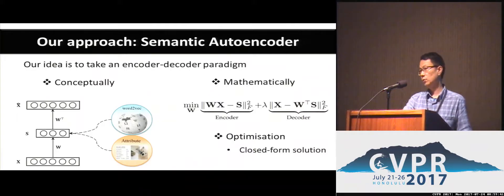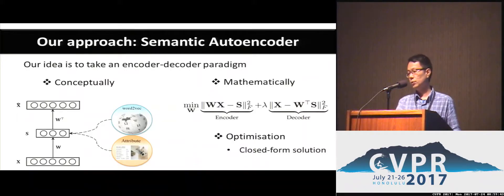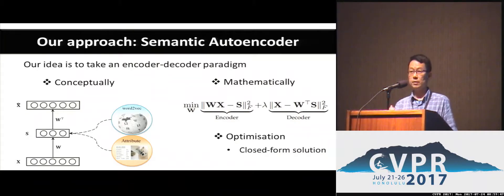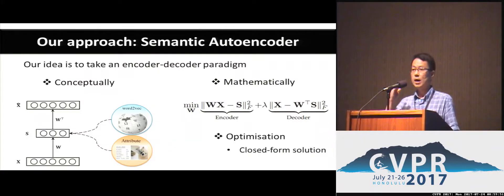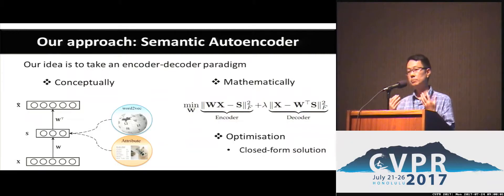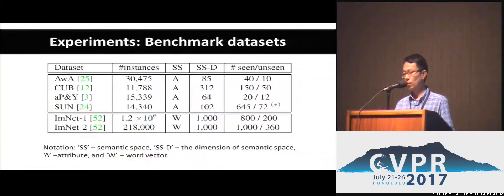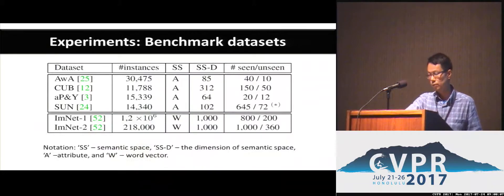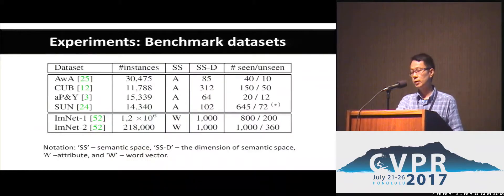Our idea is quite simple. We propose to use a semantic autoencoder. We use the semantic space as an embedding space — we learn a projection from X to S, but then we force S to be able to reconstruct X. By adding this reconstruction task, we force S to preserve a richer set of information, which can help the model generalize better to the unseen classes. The formulation is very simple — it's closed form, and can be solved using six lines of MATLAB code, which is shared on GitHub.